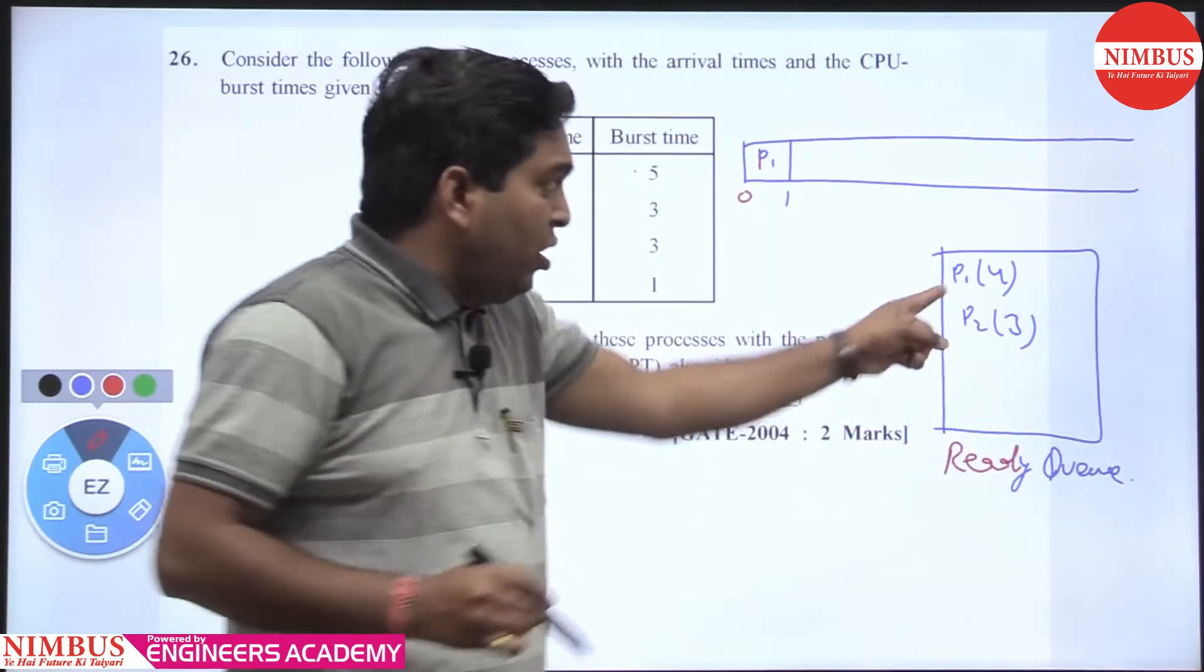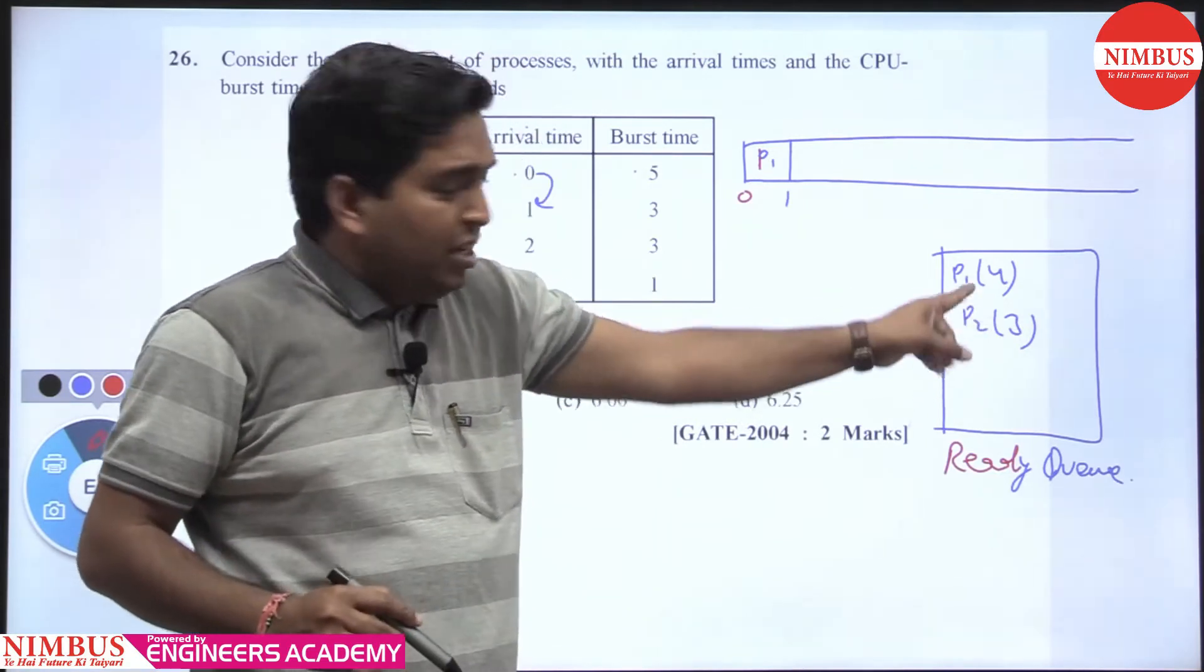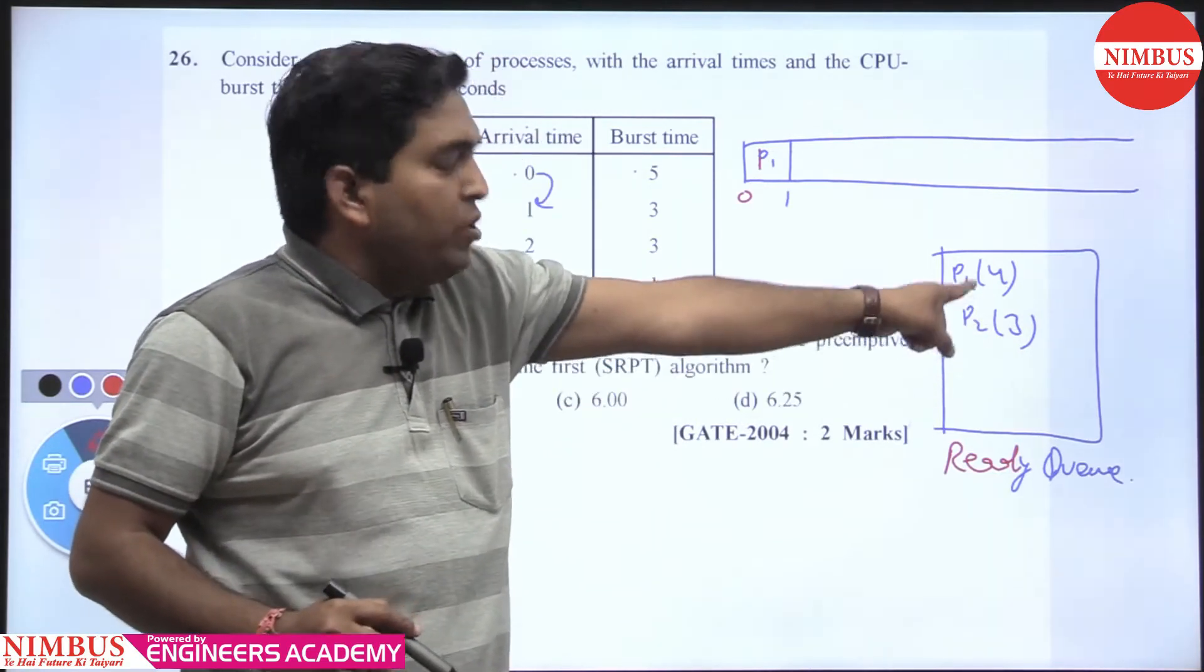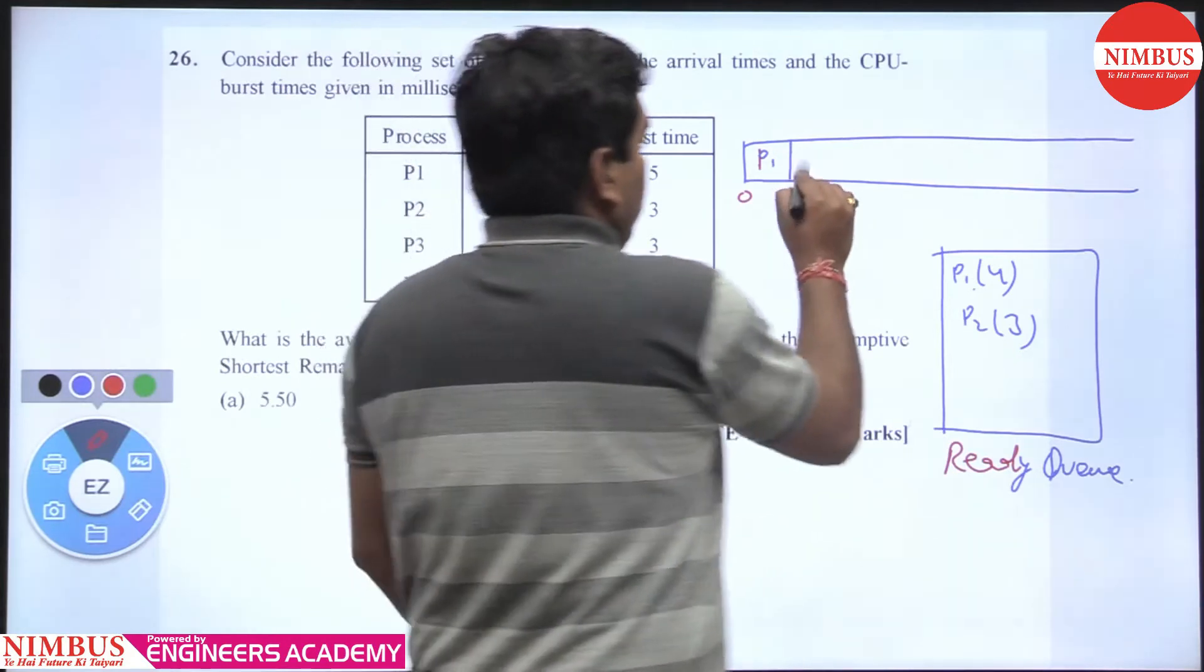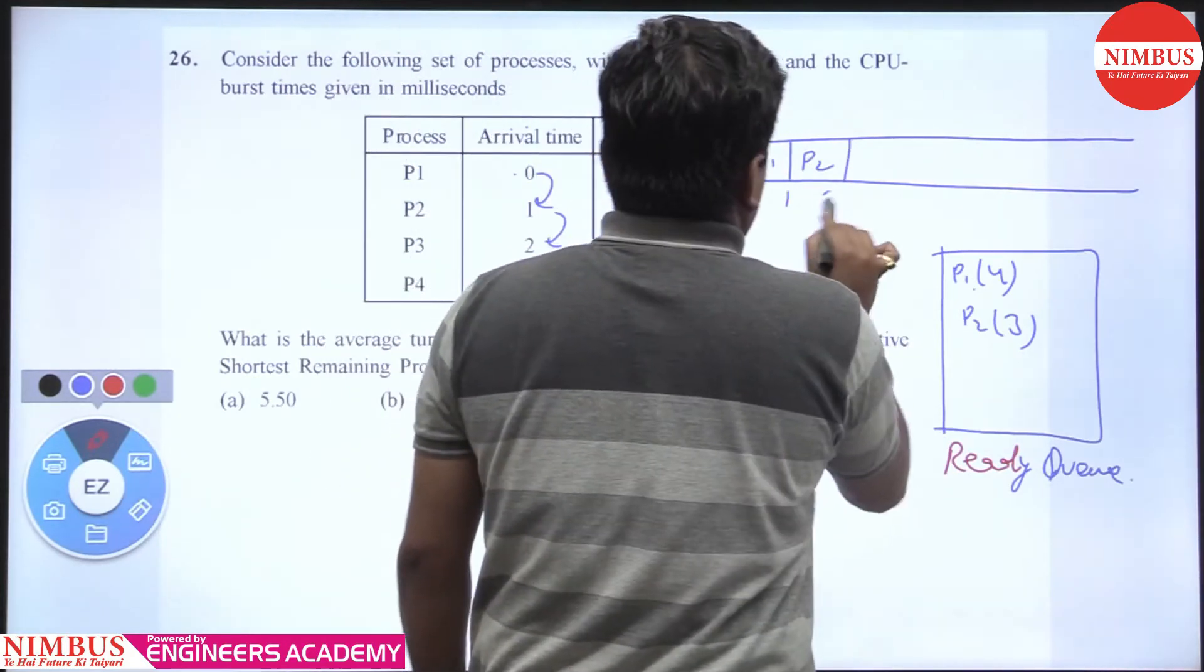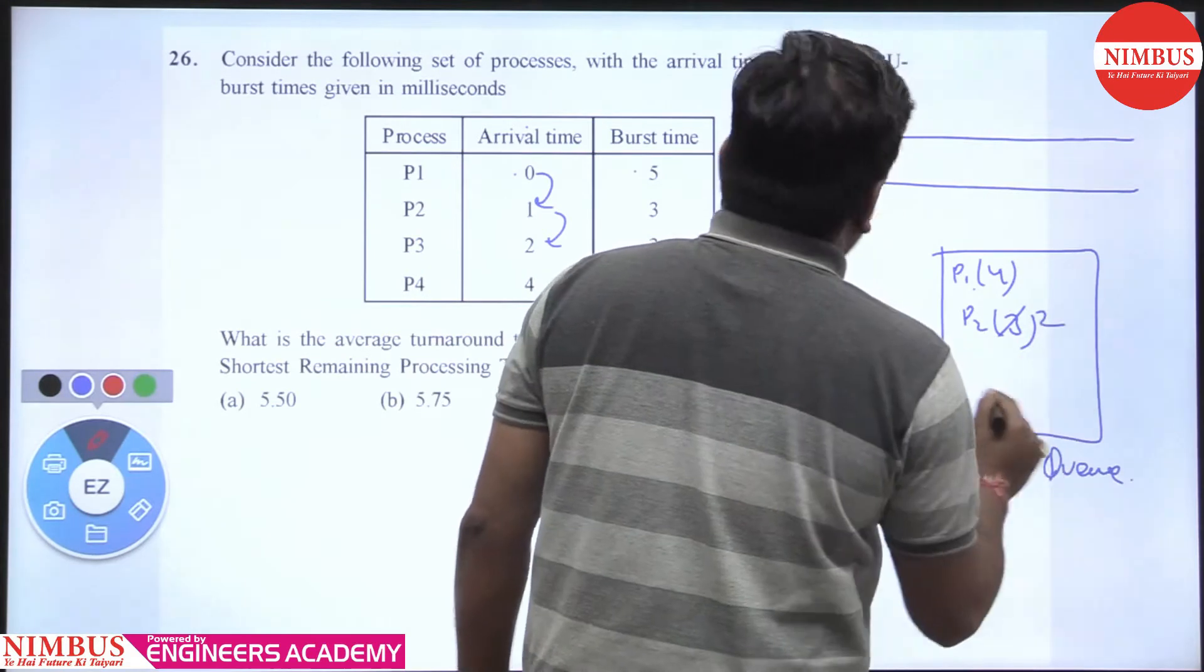Then we run P2 until the next arrives. From 1 to 2, it has 2 remaining, and P3 has time 3. Which one is minimum? P1 requires 4, P2 requires 2, P3 requires 3. P2 is minimum.